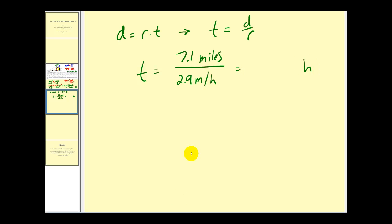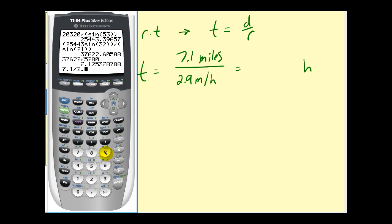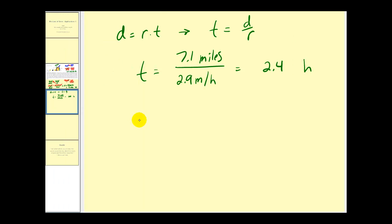7.1 divided by 2.9, which is approximately 2.4 hours. And if we wanted to convert this to minutes, 2.4 hours times 60 minutes in one hour. So the units of hours simplify out. And we're left with 2.4 times 60, which is equal to 144 minutes. So in hours it would be 2.4 hours, in minutes it would be 144 minutes.